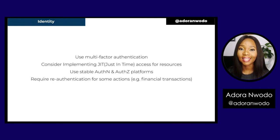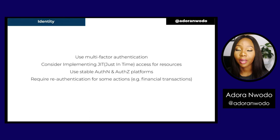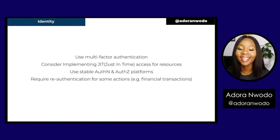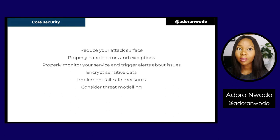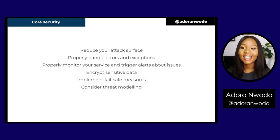It's also important to use stable authentication and authorization platforms — one reason the Federated Identity pattern exists. Requiring re-authentication for sensitive actions is important too; for financial transactions like large money transfers, it's always safer to re-authenticate the user before proceeding. Additionally, reduce your attack surface: if you don't need a VM, remove it. The bigger your attack surface, the easier it is for unauthorized users to gain access.